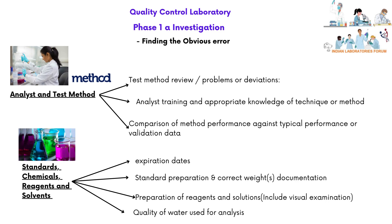Phase 1a investigation to find out the obvious error will include: review of analyst and test method details, review of the test method used, problems or deviations occurred, analyst training, competency, and appropriate knowledge of the technique or method used for testing. Comparison of method performance against typical performance such as spike recovery or validation data. Review of standards, chemicals, reagents, and solvents used in testing, including expiration dates, standard preparation, and correct weights documentation. Preparation of reagents and solutions, including visual examination and quality of water used for analysis.